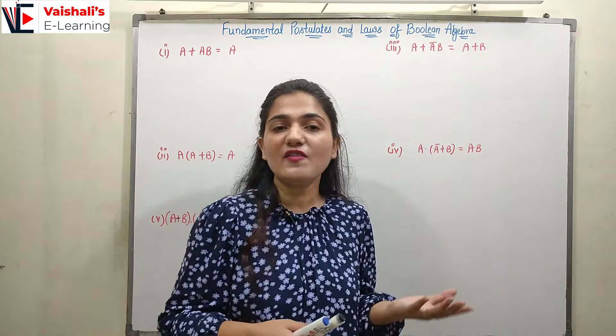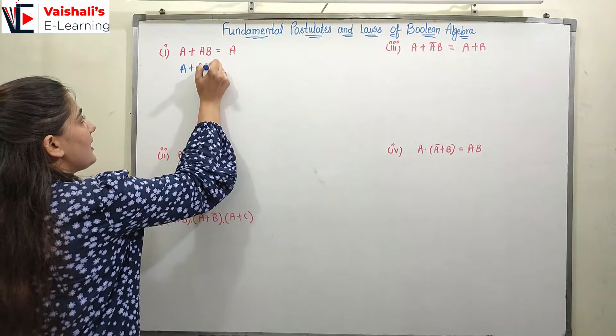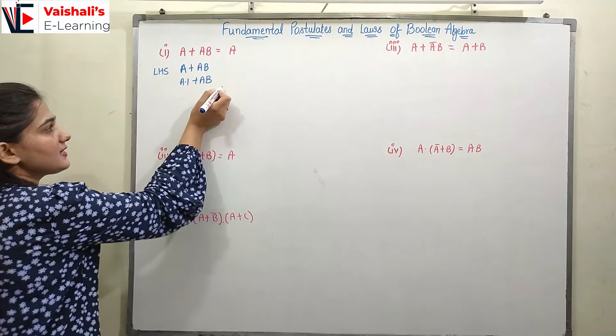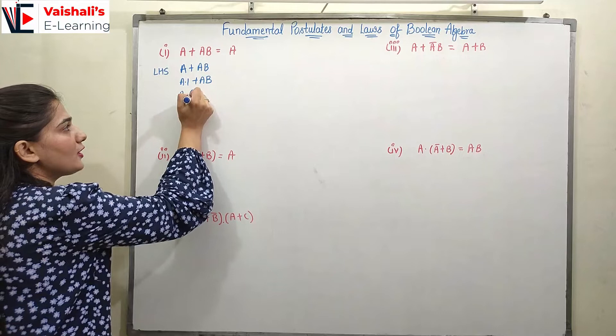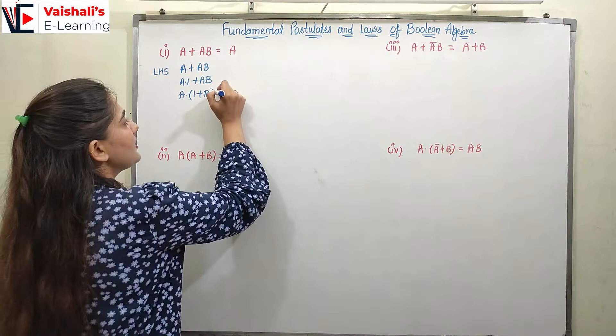Let's start with the first expression: a + ab. So on the left hand side, how can we write a? We can write a·1 + ab. Since a·1 = a, we can take a as common: a·(1 + b), which is the reverse of expanding the bracket.